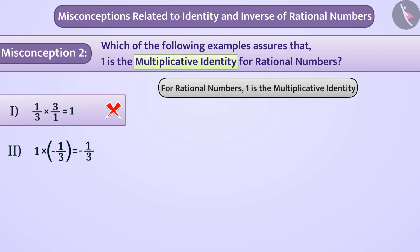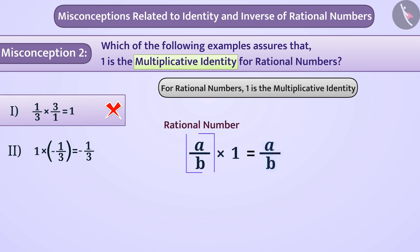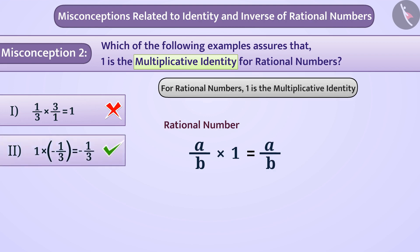Remember that if any rational number is multiplied by 1, the answer is the same rational number — there is no change in its value. Therefore, 1 is the multiplicative identity. Here, option 2 is the correct answer.